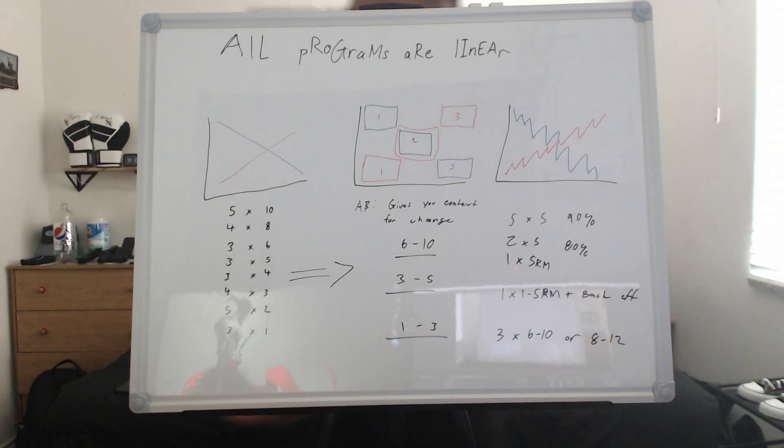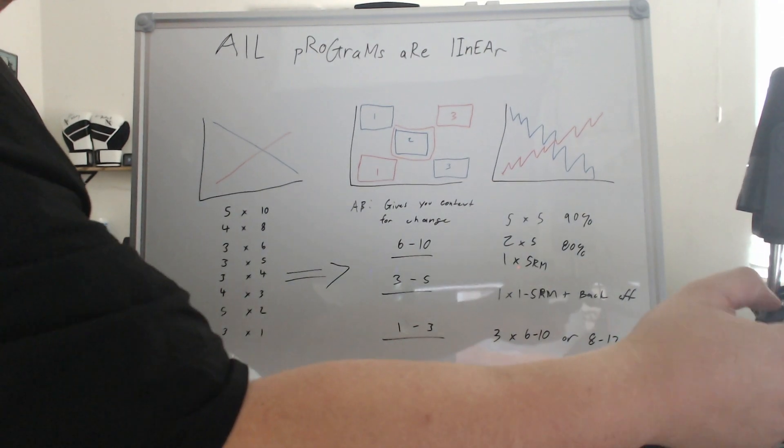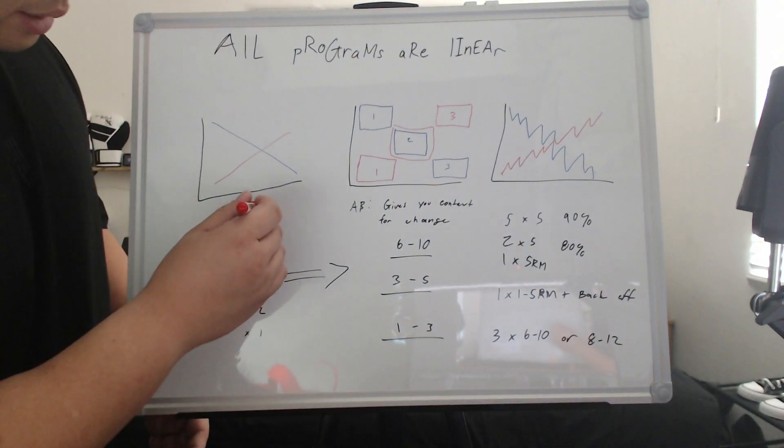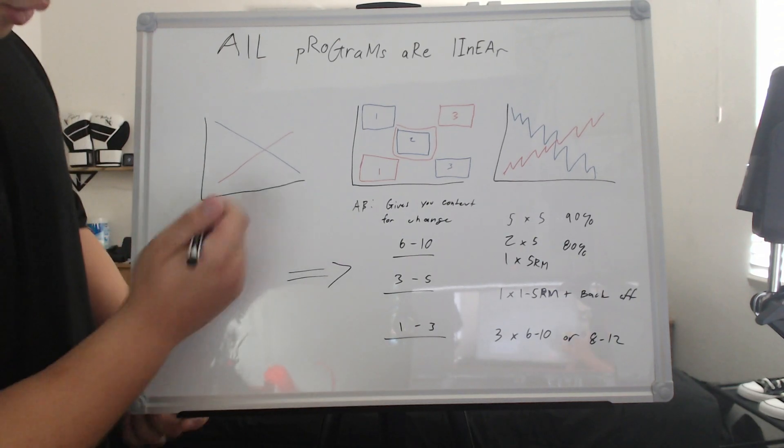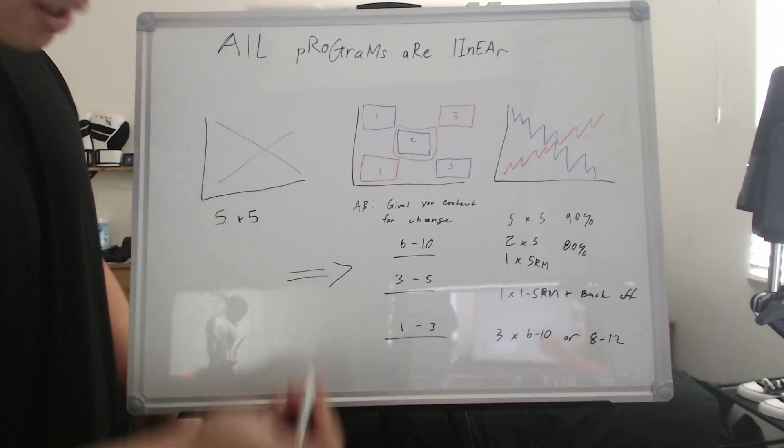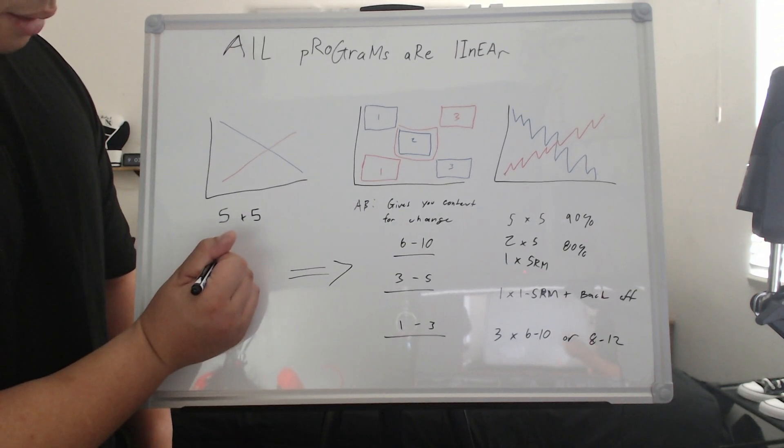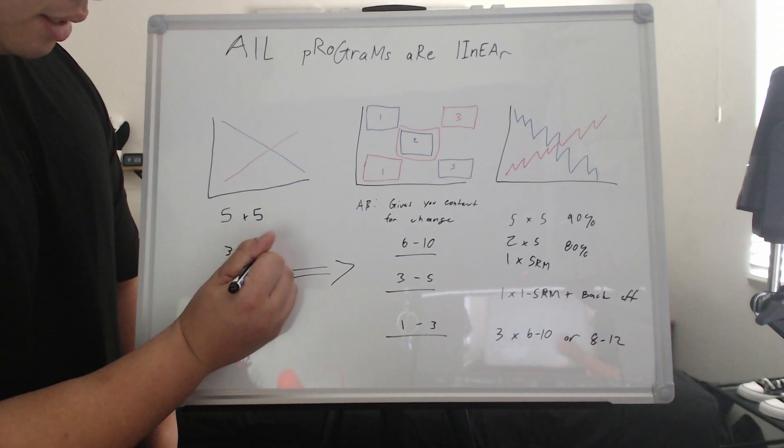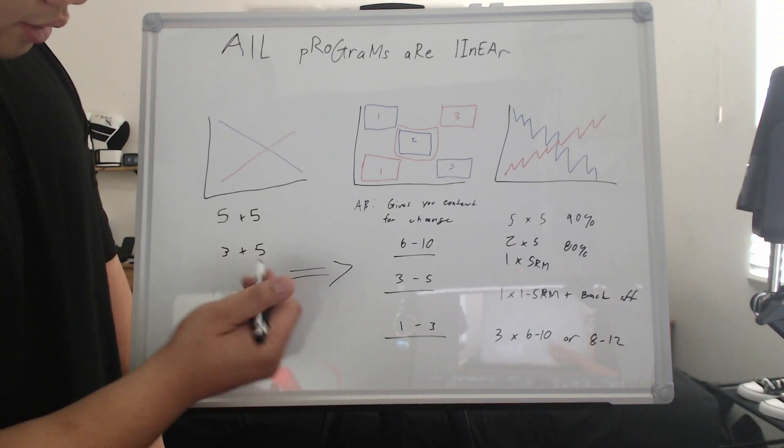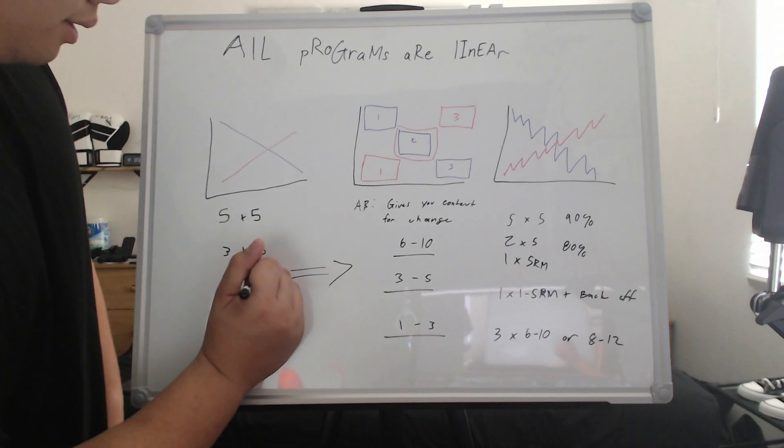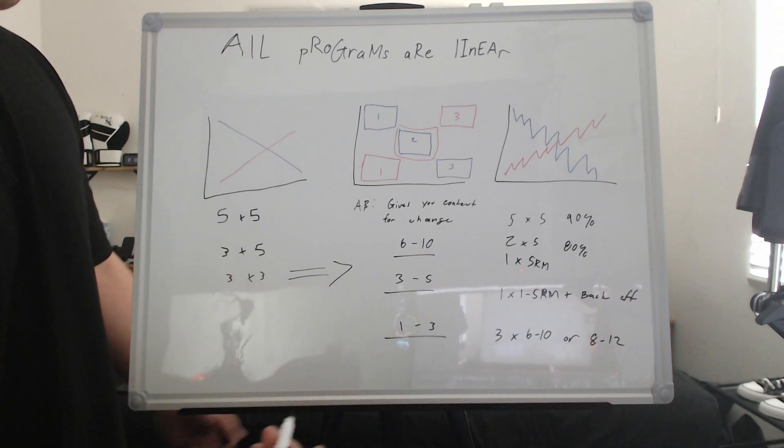The thing that I want to make clear is that there is a big difference between linear periodization and linear progression. Linear progression just means you're adding weight session to session or week to week while sets and reps stay the same. So five by five, like Strong Lifts five by five, Starting Strength, I think Madcow, I think Greyskull. They all run that very similar thing. And there's nothing necessarily wrong with that. The only problem where it becomes wrong is when you become too loyal and too rigid with that system.